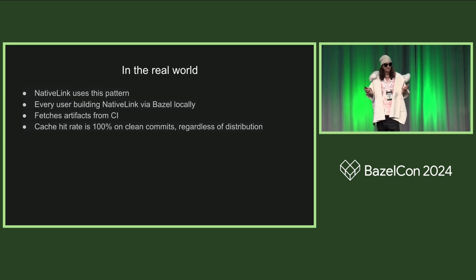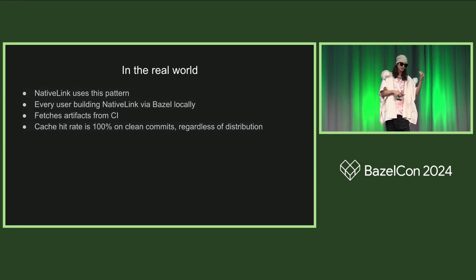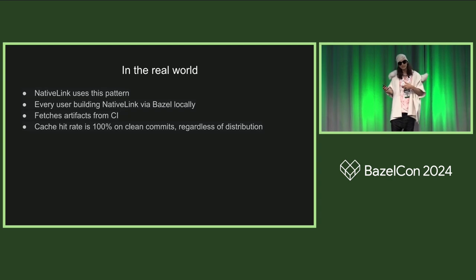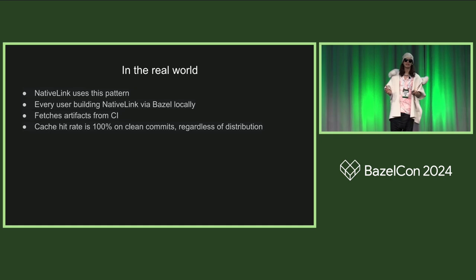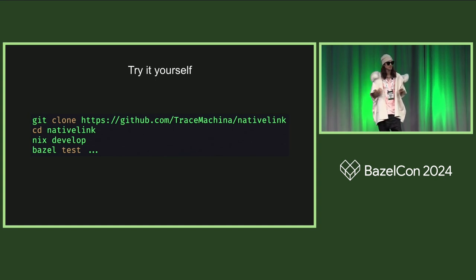That's basically it. We use this pattern in the NativeLink codebase already. So every time a user fetches the repository, they will invoke this flake module, which creates the Bazel RC file, which then, because the Bazel RC file needs to be created, fetches the local environment. And we run the same exact job in CI, and we push it to a publicly available cache — so this is not some closed cache or user-specific cache, this is open for anyone. And we kind of treat it as an extension to the Nix store, like a finer-grained variant of the Nix store. And if you want to try this, you can just clone the repository and run nix develop. This is the one nonstandard step that is required here, because we need to invoke all of these shell hooks and Nix configurations. And that's it. Thank you.